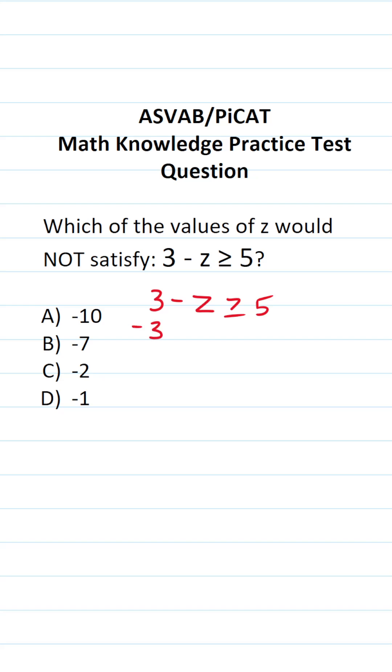To solve this inequality, the first thing we're going to do is subtract 3 from both sides. This crosses out, leaving us with negative z over here, greater than or equal to 5 minus 3, which is going to be 2.